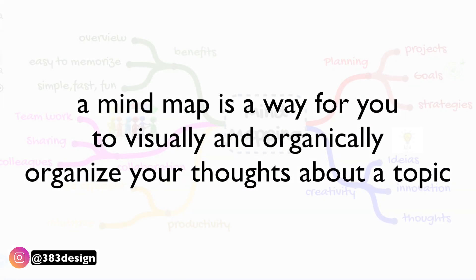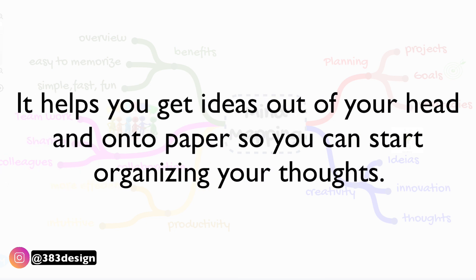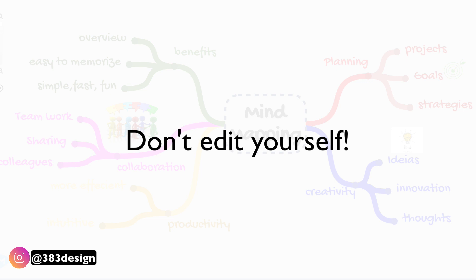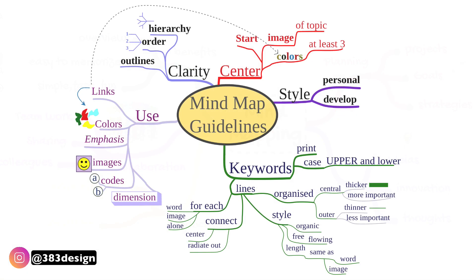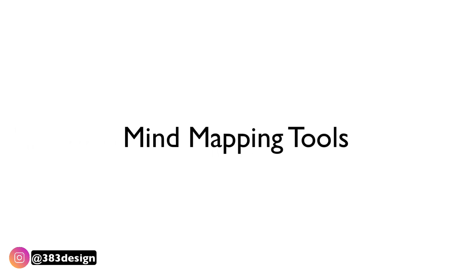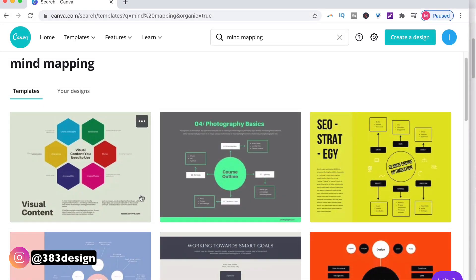A mind map is a way for you to visually and organically organize your thoughts about a topic — it's almost like a brain dump. It helps you get any ideas out of your head and onto paper so you can start organizing your thoughts. Don't edit yourself, but after you do the exercise you'll be able to see what stands out and you can build on that. And if you're looking for some tools to help with this, Canva has some great templates.